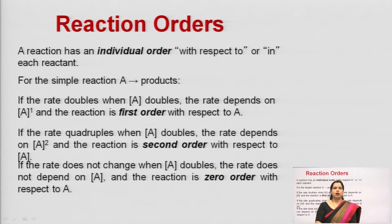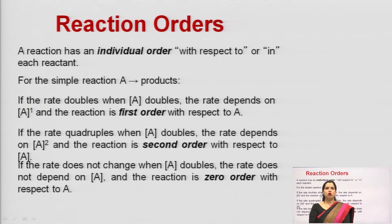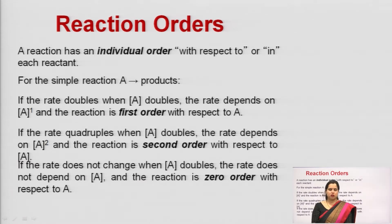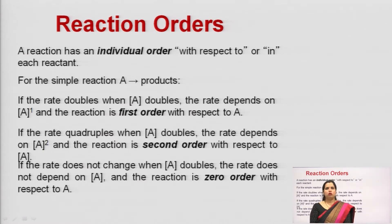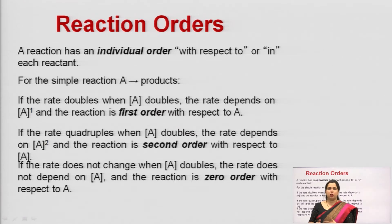Reaction orders: a reaction has an individual order with respect to each reactant. For example, if one substrate is participating in a reaction to give a product, it is following a first order reaction. If the reactant concentration is independent of the rate of reaction — meaning concentration does not affect the rate — that is considered a zero order type of reaction.